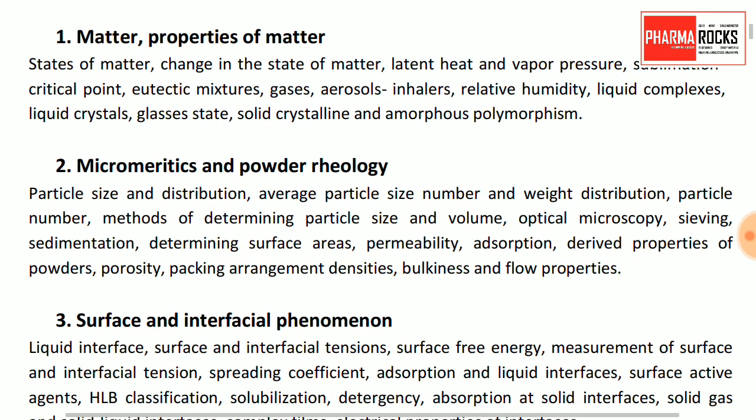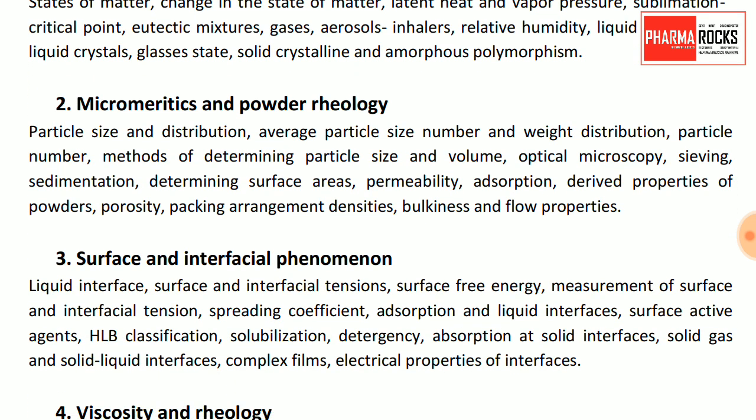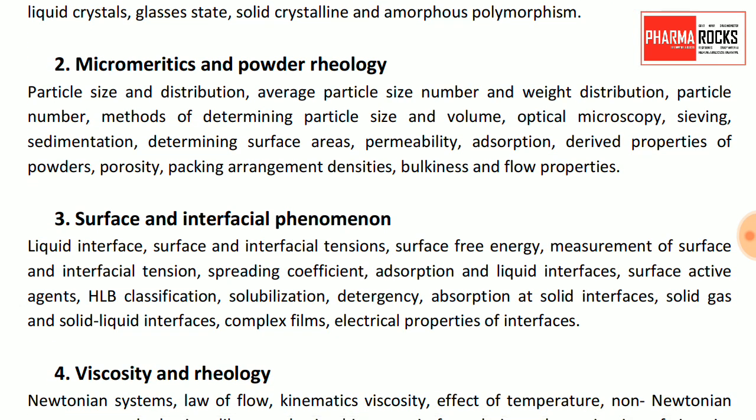Next is micromeretics and powder rheology, a very important chapter. You have to study particle size and particle size distribution, average particle size, weight distribution, and particle number. In powder rheology: bulk density, tapped density, Hausner's ratio, and angle of repose.